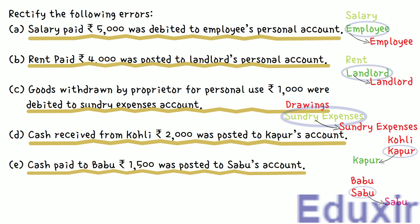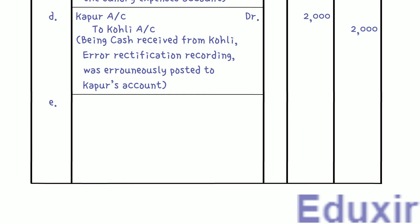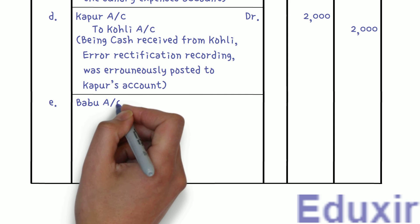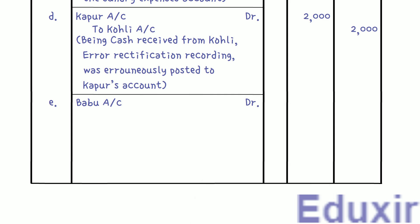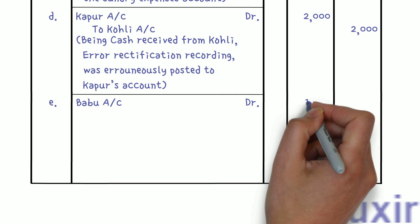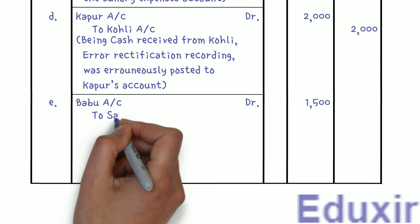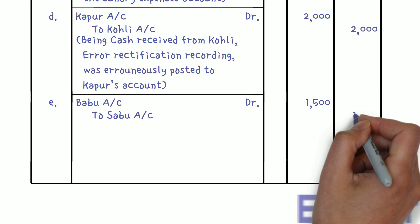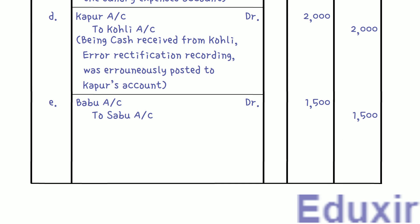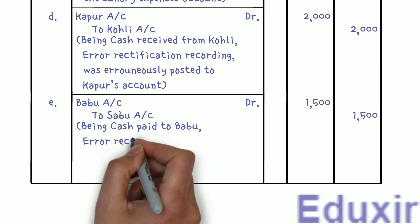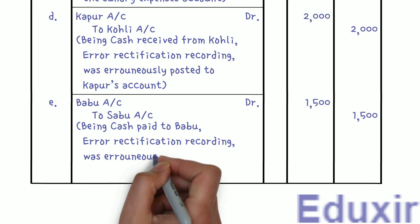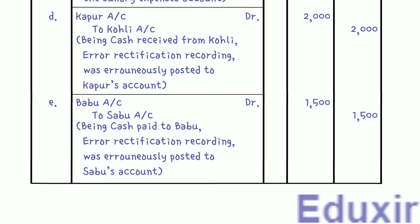Let us record the final entry. Entry: Babu's Account DR Rs. 1,500; To Sabu's Account Rs. 1,500. Narration: Being cash paid to Babu — error rectification, recording was erroneously posted to Sabu's account. With that, we have completed the journalizing of all the error rectification entries, and that is the end of this solution.